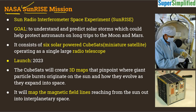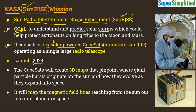To study this, NASA has declared a mission called the Sunrise Mission. The full form of SUNRISE is Sun Radio Interferometer Space Experiment. The goal of this mission is to understand and predict solar storms. This mission will consist of six solar-powered CubeSats — miniature satellites small enough to hold in your hand — which will be launched in 2023.